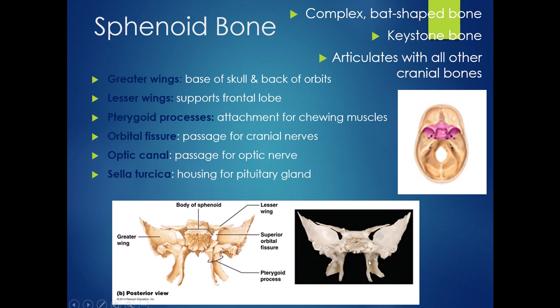Sticking down from the bottom of the sphenoid bone, if you look at the back side of the jaw, you'll see the pterygoid processes, which are attachment points for some of our chewing muscles. The body of the sphenoid is known as the sella turcica, which means 'Turk's saddle.' If you look at it, it looks somewhat saddle-shaped, and that is the housing for your pituitary gland — your pituitary gland kind of sits in that little saddle.